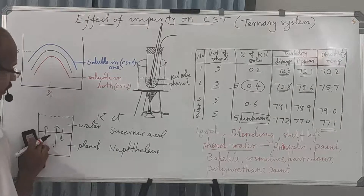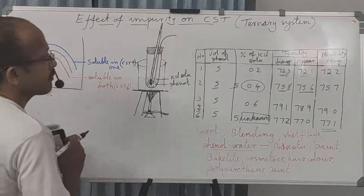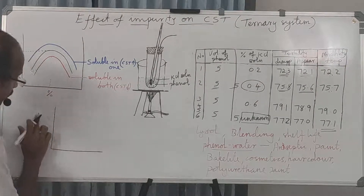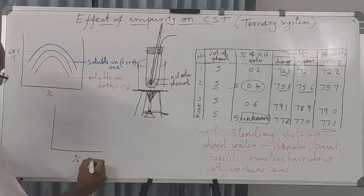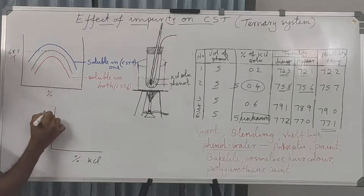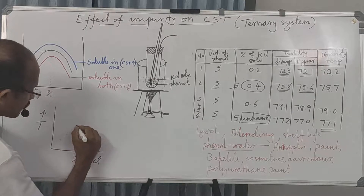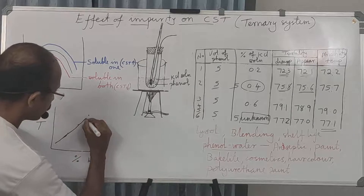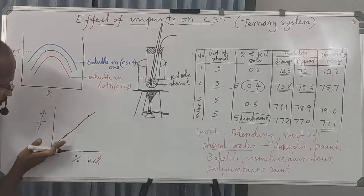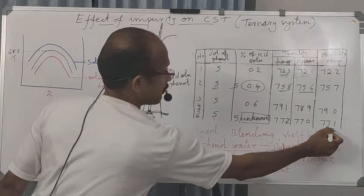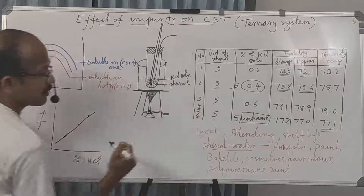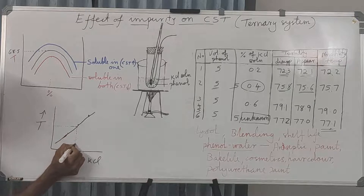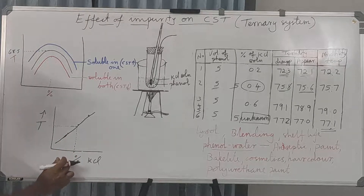Now, we can plot a graph with percentage of KCl on the x-axis and miscibility temperature on the y-axis. We plot the different points and draw a straight line through them. For the unknown sample, we know its miscibility temperature, so we locate that temperature on the graph and read off the corresponding concentration. This gives us the percentage of KCl in the unknown solution.